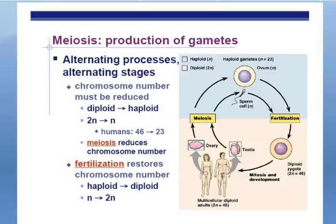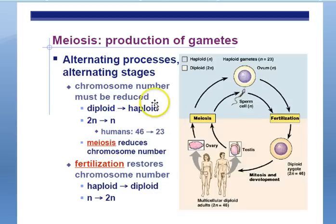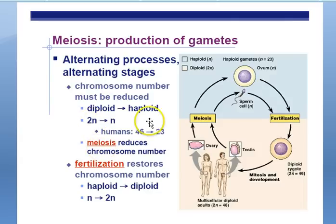Meiosis and production of gametes. The chromosome number must be reduced from diploid to haploid. Diploid means having two sets of chromosomes — the prefix 'di' means two. Haploid means having only one set of chromosomes; think of it as 'half-loid,' or having half the normal number of chromosomes as a body cell. The letter N represents the number of sets of chromosomes. One N is one set of 23 chromosomes for humans; 2N would be two sets of 23 chromosomes, or a total of 46. Meiosis reduces the chromosome number from diploid to haploid — 46 chromosomes to 23 chromosomes.